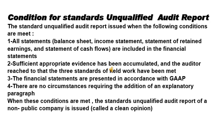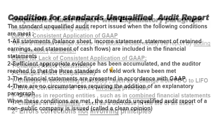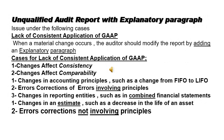Conditions for the standard unqualified audit report include four conditions: for example, all statements — balance sheet, income statement, statement of retained earnings, and statement of cash flows — are included in the financial statements; and the auditor has gathered sufficient appropriate evidence. The auditor may issue an explanatory paragraph in two basic cases: departure from GAAP and doubt about going concern.